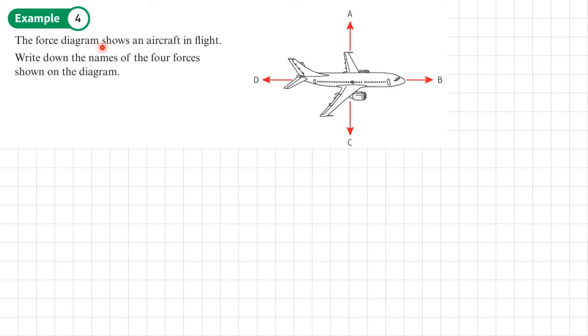Example 4. The force diagram shows an aircraft in flight. Write down the names of the four forces shown on the diagram. So A, I suppose this is the force that is causing the aircraft to move upwards. So we would call this an upward thrust. So this is what's pushing the aircraft upwards. Nothing's pulling it. Remember, thrust pushes. So you've got the force of the engines and these flaps and ailerons and so on pushing the aircraft up. So it's an upward thrust.